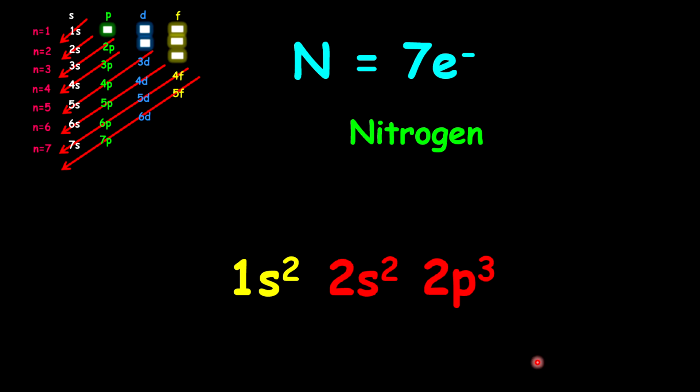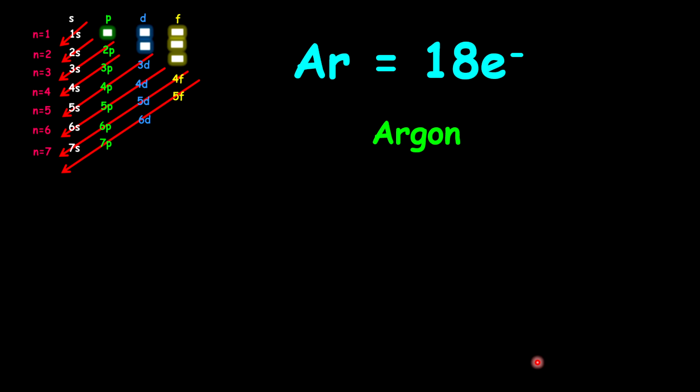Now, I want you to look at the periodic table for argon and note the number of electrons. Argon has 18 electrons and sits in group 8, meaning it is a noble gas. Starting with 1S2, then 2S2, then 2P6 — that gives us 10 electrons. We still need 8 more, so after 2P we go to 3S2, then 3P6.